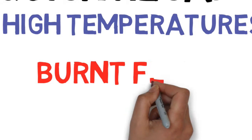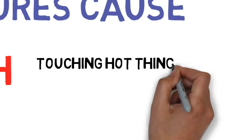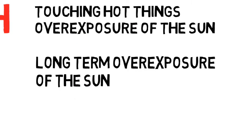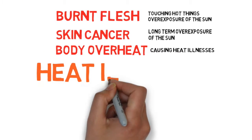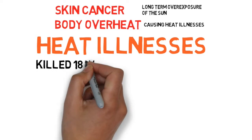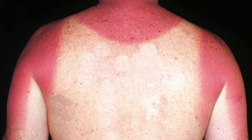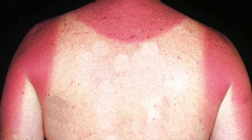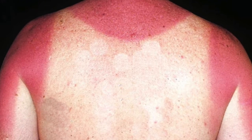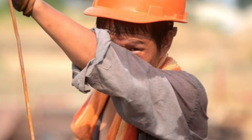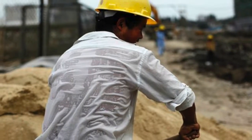Now let's do a quick recap of what we have discussed. High temperatures cause burnt flesh from being exposed to hot objects or the sun, skin cancer caused by long-term overexposure to the sun, and overheating of the body causing heat illnesses. Heat illnesses killed 18 workers in 2014 with 2,630 moderate to major injuries. When your body overheats, your internal molecules become very excited, damaging you internally much in the same way your skin is damaged when you experience sunburn. Sweat is the most effective way to cool down your body.